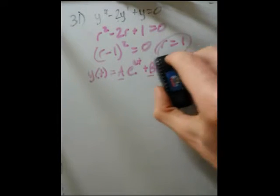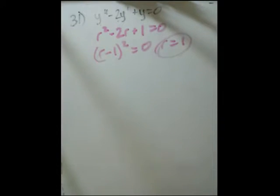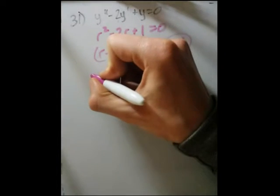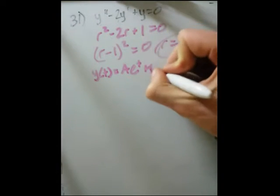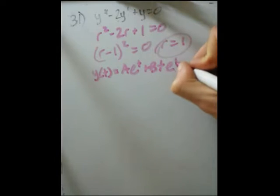And then we have the same one. So plugging our value of a, which is 1, the root of the characteristic equation, we have y of t is equal to a e to the t plus b t e to the t.